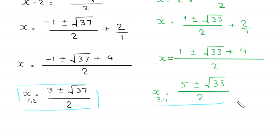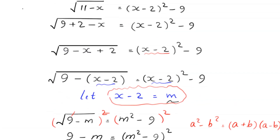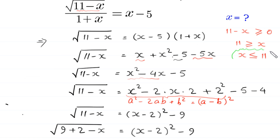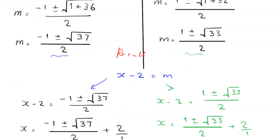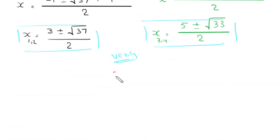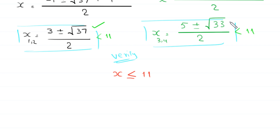Now we verify all four values using the domain x must be less than or equal to 11. Both (3 plus root 37) over 2 and (3 minus root 37) over 2 are less than 11, so these two solutions are valid. Both (5 plus root 33) over 2 and (5 minus root 33) over 2 are also less than 11, so all four solutions are valid. Therefore, the equation has four solutions.